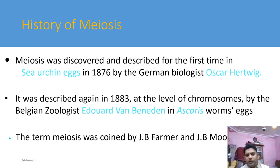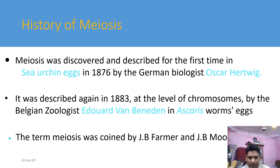The history of meiosis: who introduced meiosis? Meiosis was described and discovered by German biologist Oscar Hertwig in 1876 during his study on sea urchin eggs. Later, in 1883, it was further studied at the level of chromosomes by Belgian zoologist van Beneden, during his study on roundworm.